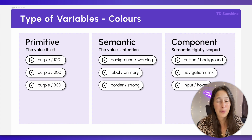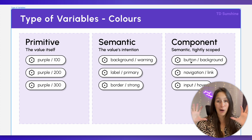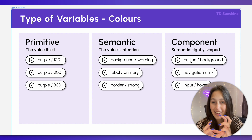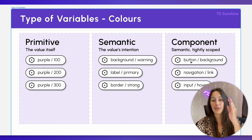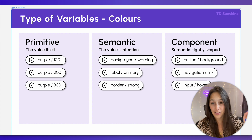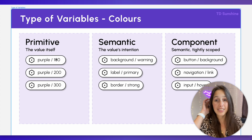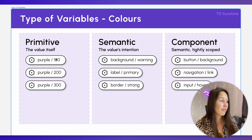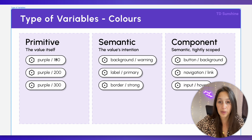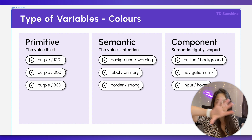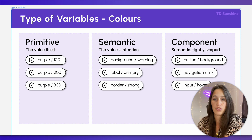The third level of collection — and they mention we might not always need this — would be on the component level. So I can have a component-level collection and inside of it a variable called 'button background', or a group called 'button' with one variable called 'background', and I'll set the color to 'background warning'. So I'm calling an alias from the semantic collection which is calling an alias from the primitive collection. This nested system really protects us — if all the shades of purple need to change to green, I just change them in the primitives and everything else updates automatically.